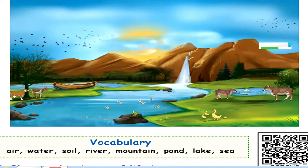Look at the picture, children. Can you see a mountain, a river, a pond and a lake? The mountains are made up of rocks and soil. The river, a pond and a lake are full of water. The soil and water help plants to grow. We get our food from plants. We breathe air. Air, water and soil are non-living things.